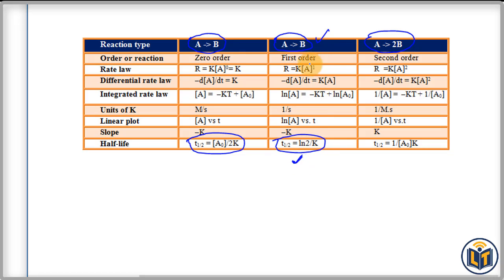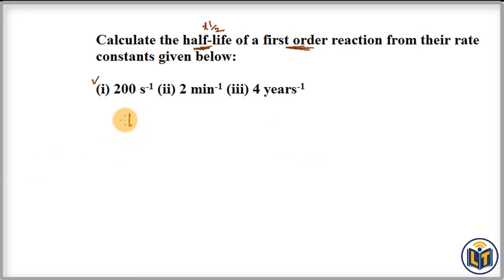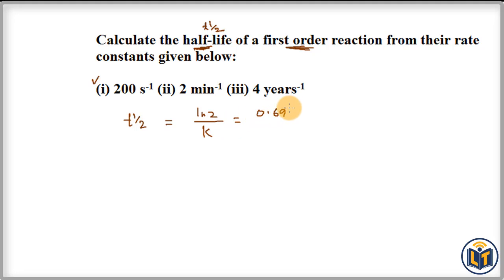For a first-order reaction, the relation is: T½ = ln 2 / K, where ln 2 equals 0.693. So T½ = 0.693 / K. We can use this relation to calculate half-life from the given values of rate constant.